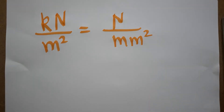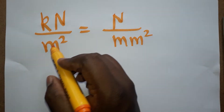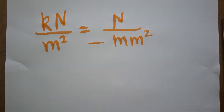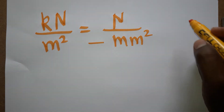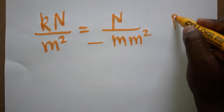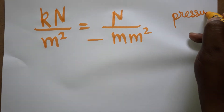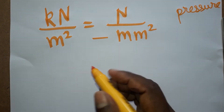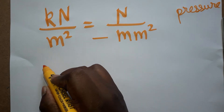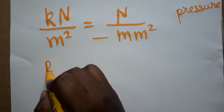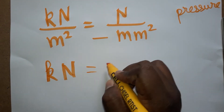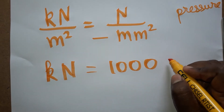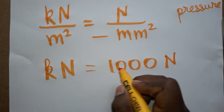Today we are going to learn how to convert kilo Newton per meter square to Newton per millimeter square. It is a pressure unit, and we are going to convert from one unit to another. First, kilo Newton: kilo means a thousand Newton, which we can write as 10 power 3, or simply one thousand Newton.